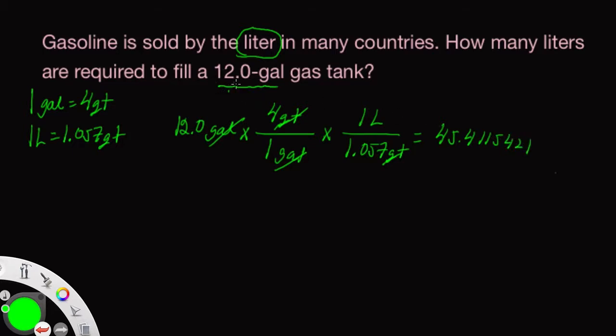The starting value here is represented by three significant figures. Let's highlight the three that we want. Look at the fourth one over. It's less than five, so we round this down to 45.4 and the units are liters. We'll box that up. That's our final answer.